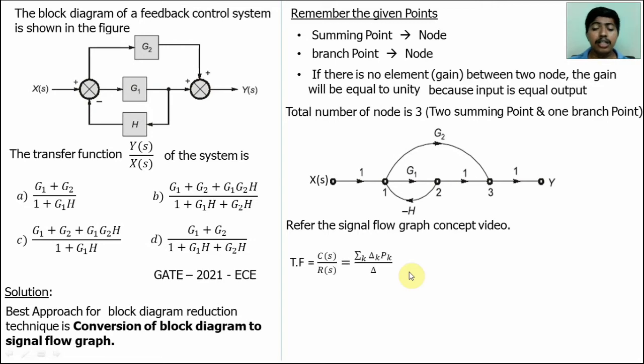The Mason's Gain formula, the transfer function C(s) to R(s) is equal to sigma k, delta k, Pk, right. k is the number of forward path. Here forward path is input to output. This is one of the forward path. X of S, G2, 1, Y. This is one of the forward path. Second forward path is this. Totally the signal flow graph have only two forward paths.